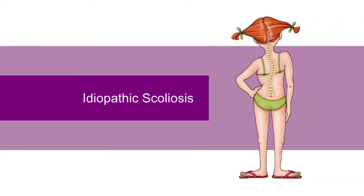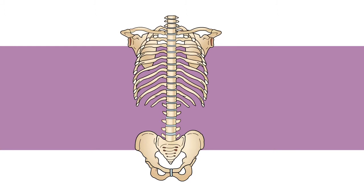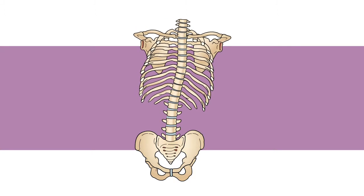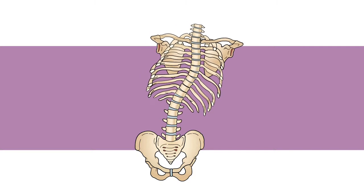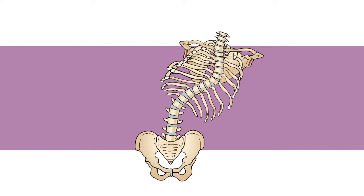The most common form of scoliosis is called idiopathic scoliosis. This type is not present at birth and normally appears in early adolescence. The nervous system, muscles, and spinal bones all appear to be normal in idiopathic scoliosis. However, the spine bends and twists as it grows, probably due to an abnormal genetic message. Once the bending starts, it continues until skeletal maturity is reached. This group of patients represents the largest group of surgical patients.